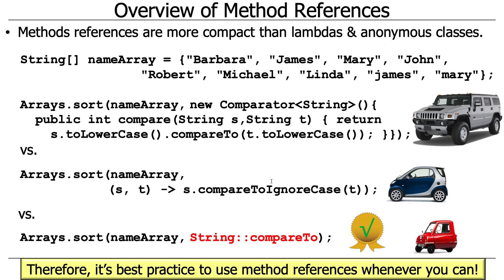It's best practice to use method references wherever you can — even better than using lambda expressions. In terms of runtime performance they're identical, but in terms of how quickly you can look at code and understand what it does once you know the syntax, method references are preferred.